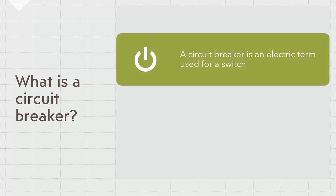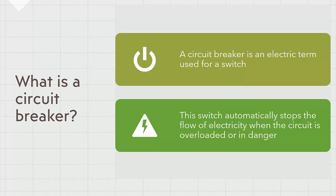First, let us understand what is the literal meaning of the word 'circuit breaker.' Those of you who have a basic understanding of electricity will know that a circuit breaker is a mechanism which is installed to automatically stop the flow of electricity whenever there is a surge or an overload on the circuit. It is essentially a protective mechanism against damage of electrical appliances due to electrical surge.